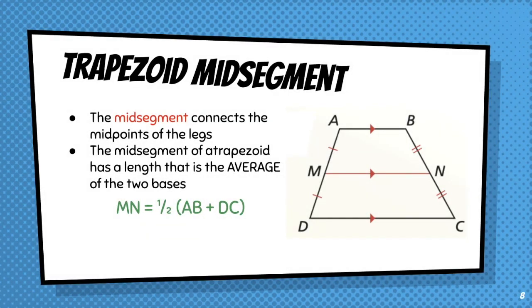There's a theorem that talks about the mid-segment of any trapezoid. Now, the mid-segment is simply a segment inside of a trapezoid whose endpoints are on the midpoint of the two legs. The mid-segment is also really cool because it's going to be parallel to both of the bases. And what's even cooler is that the length of the mid-segment is the average of the length of the two bases.